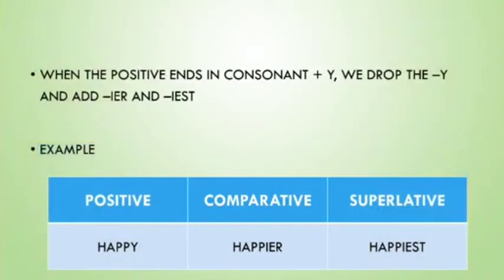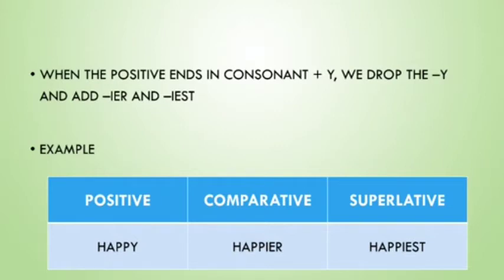The next rule: when the positive ends in consonant plus -y, we drop the -y and add -er and -est. For example, the word 'happy' ends in consonant plus -y. To change it into comparative form, we drop the -y and add -er to make 'happier.' In the superlative, we drop the -y and add -iest. So from 'happy,' it turns to 'happier,' 'happiest'.